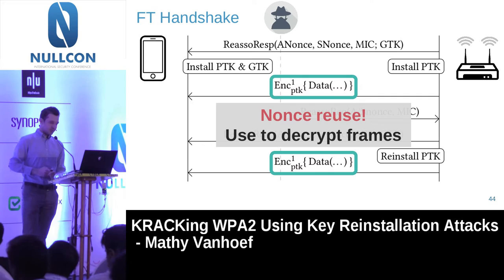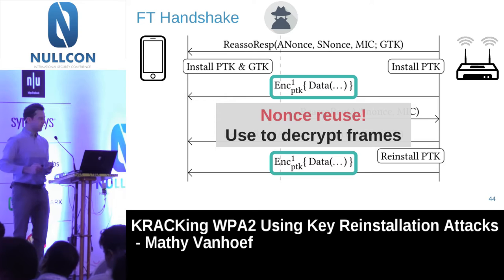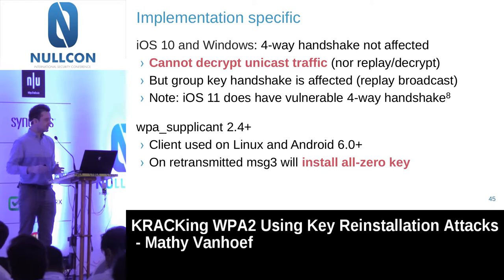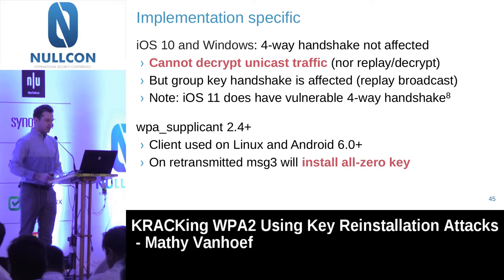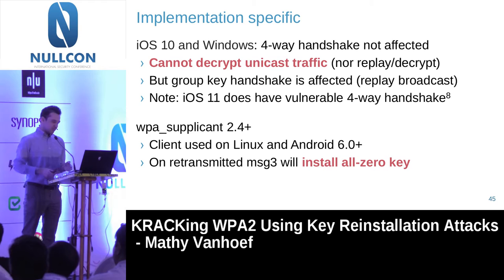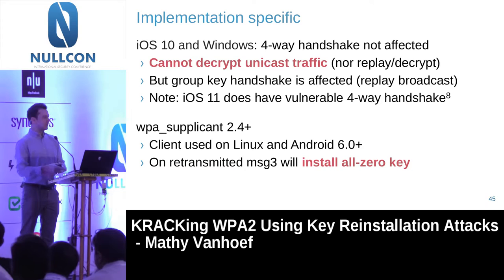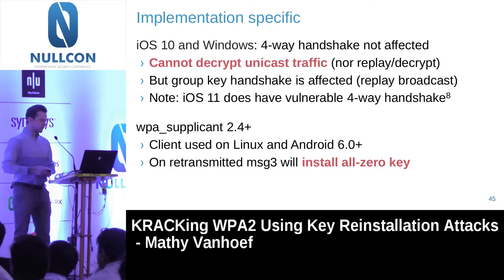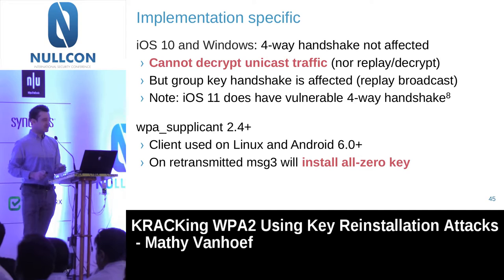The impact also heavily depends on which specific implementation we are attacking. For example, iOS 10 and Windows — the four-way handshake is not vulnerable in those. The reason is that these implementations deviate slightly from the standard and don't accept retransmissions of message 3. In a sense, it's a bit funny: they deviate from the handshake, and because of that, they are more secure. However, one important remark: iOS 11 does properly implement the standard — it does accept retransmissions of message 3, meaning it is now vulnerable.